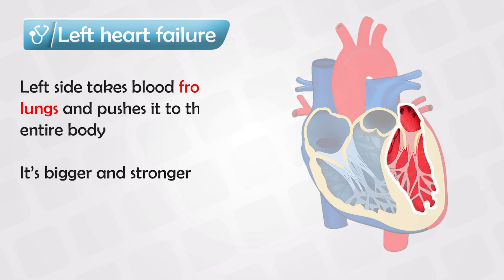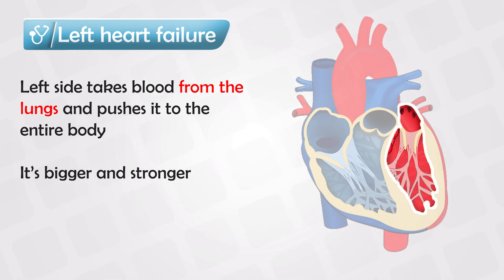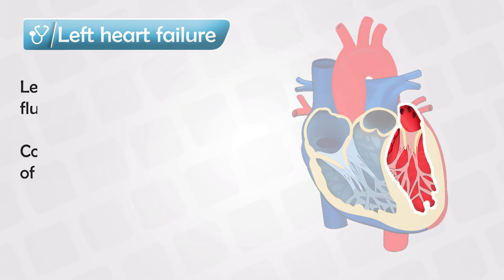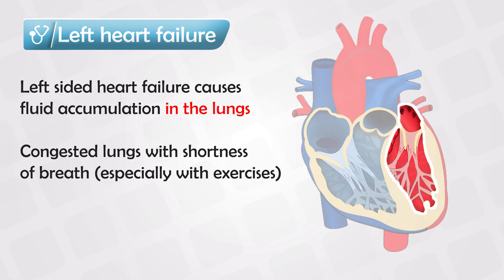The left side of the heart takes blood from the lungs and pushes it into the entire body, so it needs to be very strong to give a good pulse or push. That's why it's bigger. If there is left-sided heart failure, the blood will be congested in the lungs, because the heart cannot accept or receive blood from the lungs.